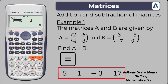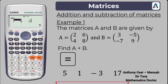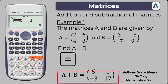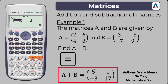So this is how you write the final answer: matrix A plus matrix B is equal to 5, 1, negative 3, 17. That is the final answer for this matrix. Thank you very much and God bless you.